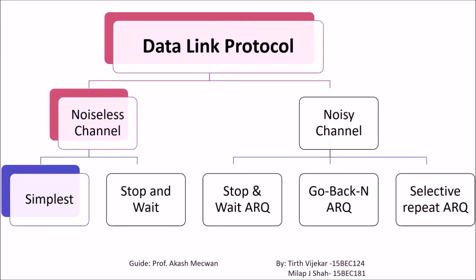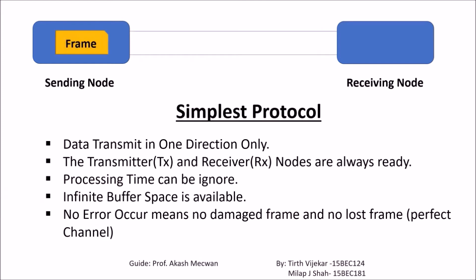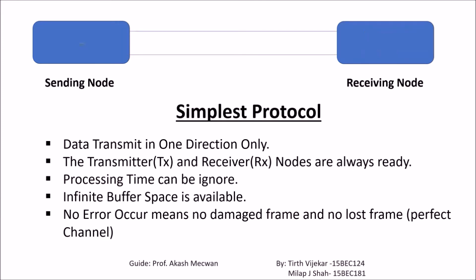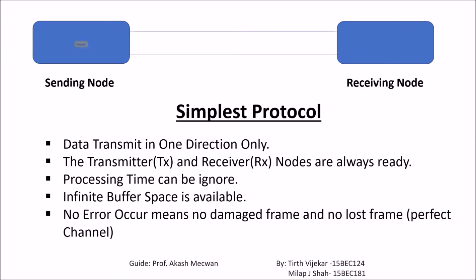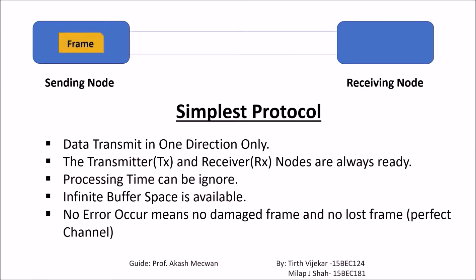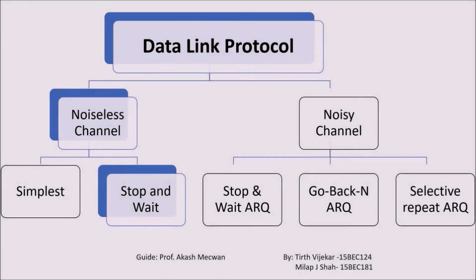Let us start with the simplest protocol in the noiseless channel. In the simplest protocol, data transmission happens only in one direction, as we can also see in the animation. The transmitter and receiver nodes are always ready, the receiver has infinite buffer space, there is no error, no damage, and no loss of the frame. This is an ideal protocol — it cannot be achieved practically.